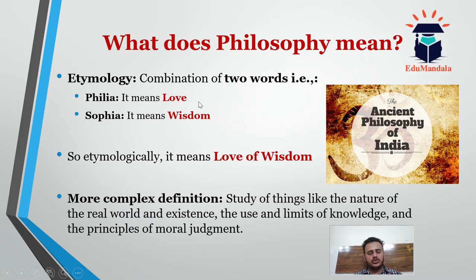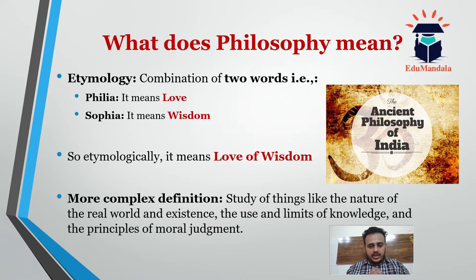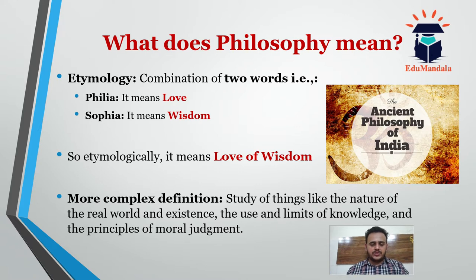What does philosophy mean? First of all, you must know the meaning of something you are going to study. If we go by etymology, philosophy is a combination of two words: philia and sophia. Philia means love and sophia means wisdom, so it comes to love of wisdom. A more formal definition is that philosophy is the study of things like the nature of the real world and existence, the use and limits of knowledge, and principles of moral judgment.